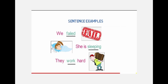The last example: 'They work hard.' Here we have the verb, but it is just telling us the way how they worked. It is not telling us the person or thing that is receiving the action. 'Hard' is just telling us the way they worked, but not telling us who or what. So this is also an example of an intransitive verb.